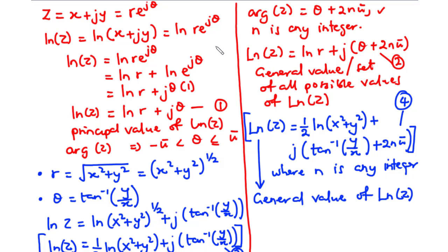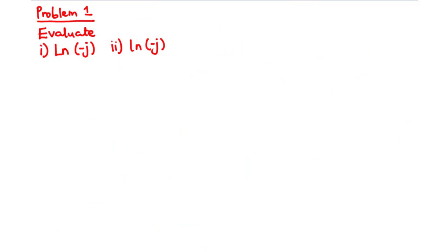Without wasting much time, let's solve some problems. Problem 1: Evaluate (i) uppercase Ln(-j) and (ii) lowercase ln(-j). For the uppercase L, we are going to find the general value of Ln(-j). For the lowercase l, we are going to find the principal value of ln(-j). Let's solve both together.